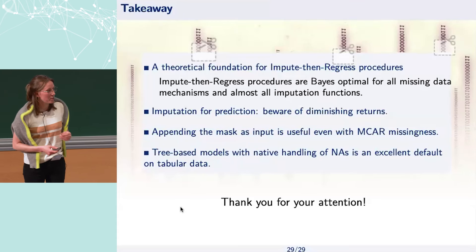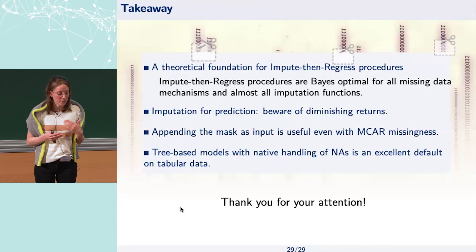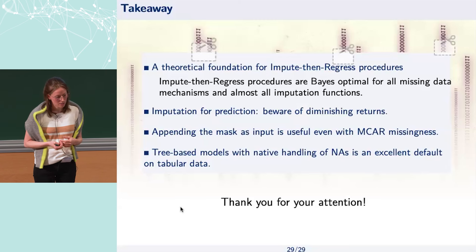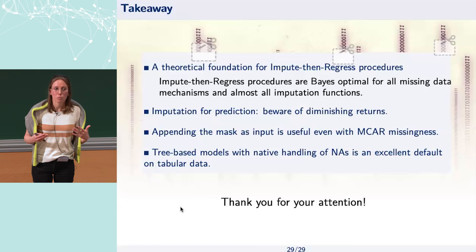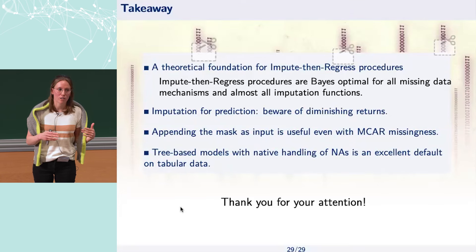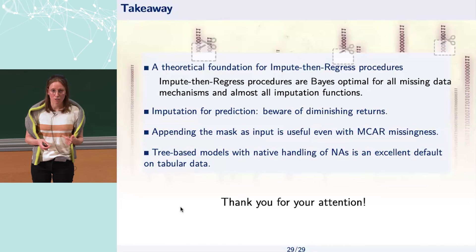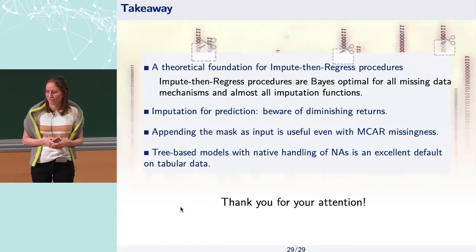To recap the take-home messages: we have theoretical foundations for impute-then-regress procedures — they are Bayes optimal for all missing data mechanisms and almost all imputation functions, even very cheap ones. For how well you should impute to predict, beware of diminishing returns — it may not be worth spending CPU effort on better imputation since it may not improve prediction. Appending the mask as input is useful even in MCAR settings. And as a practical default for tabular data, a tree-based model with native missing value handling is a strong choice.